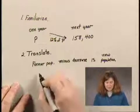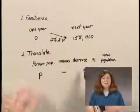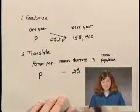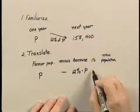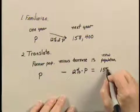The former population was P, minus the decrease would be 12% of P, or 12% times P. And that equals the new population, which was 158,400.